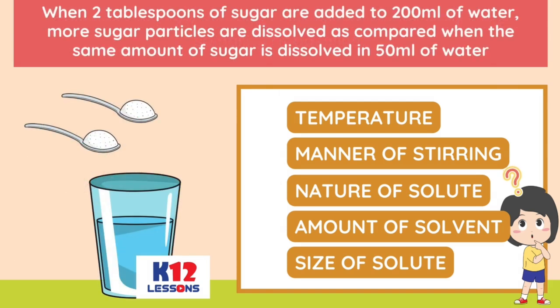When two tablespoons of sugar are added to 200 milliliters of water, more sugar particles are dissolved as compared to when the same amount of sugar is dissolved in 50 milliliters of water.